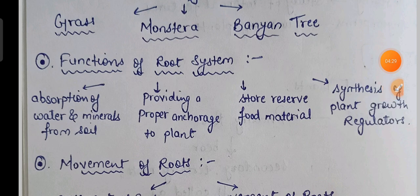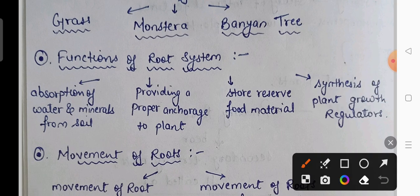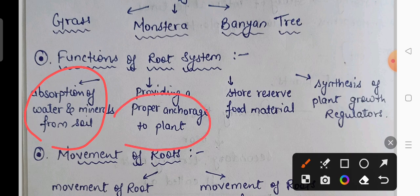The next topic is the functions of the root system. The primary function is water and mineral absorption from the soil. Another function is to provide anchorage and support — the plant can grip the soil and stand in one place. Third, roots also store reserve food material.